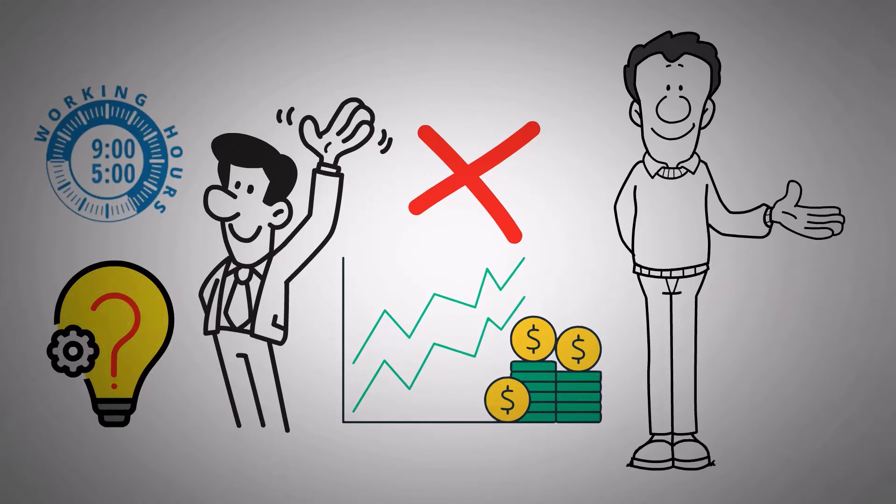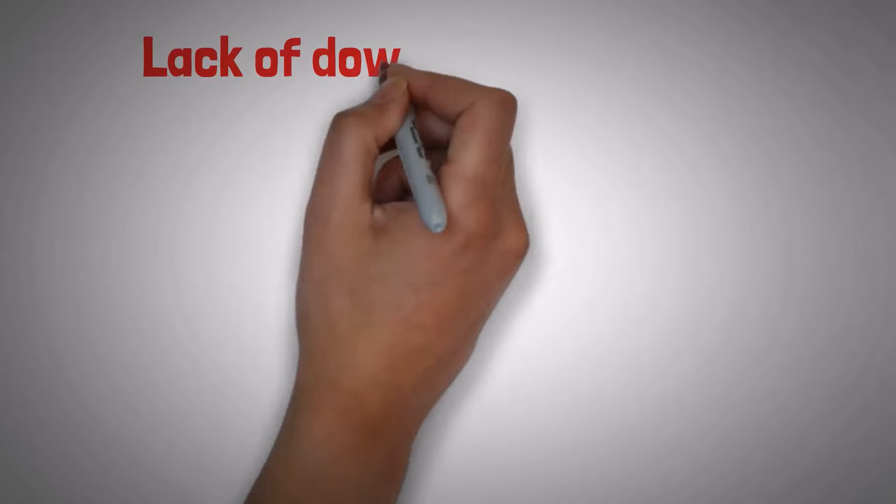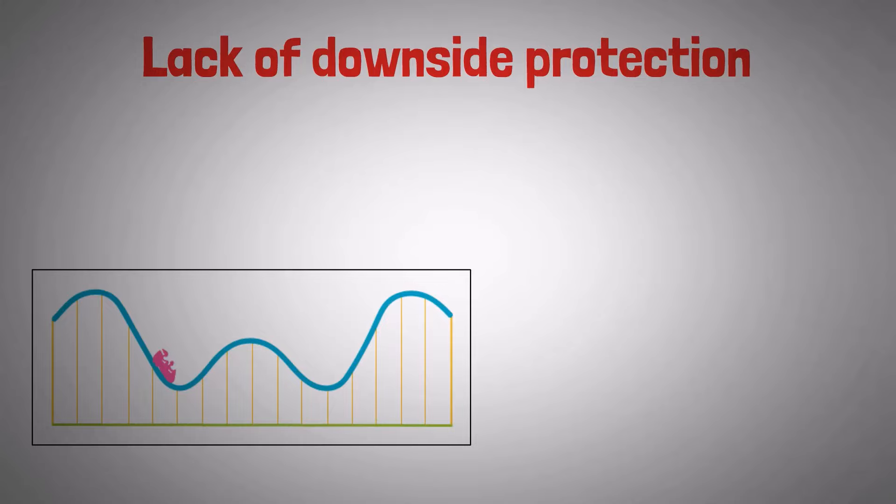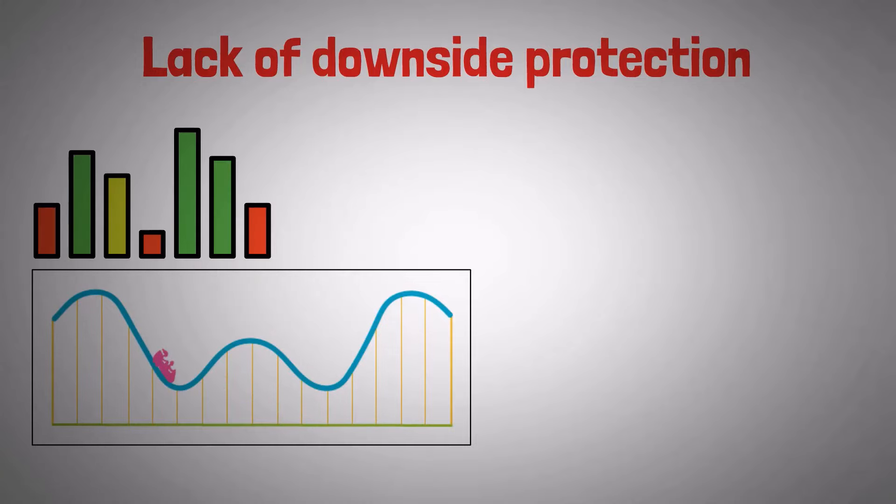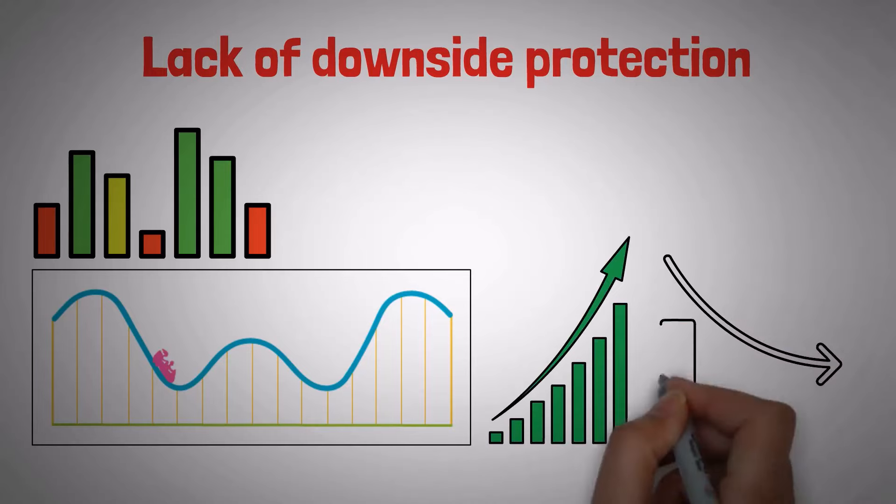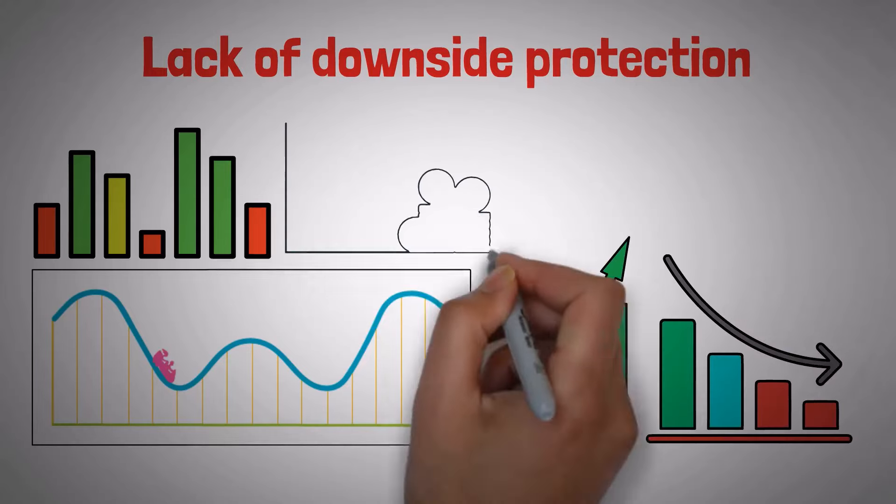The first reason among them is lack of downside protection. So here's the thing. The stock market is a bit of a roller coaster. It's had its ups and downs, and while it tends to go up over the long haul, it can give you quite the jolt with its dips and drops along the way.